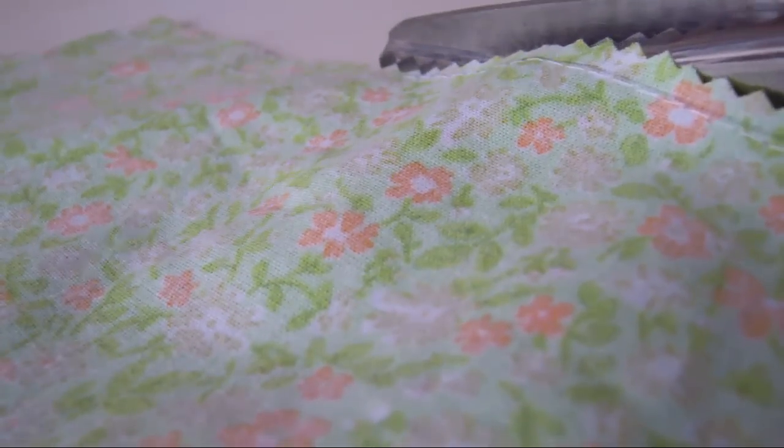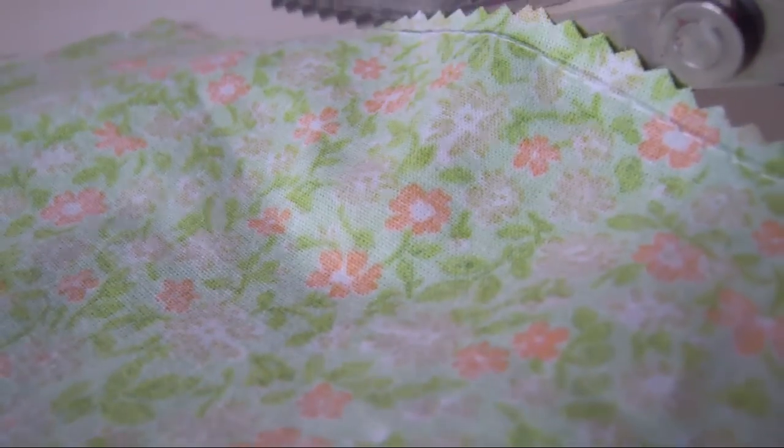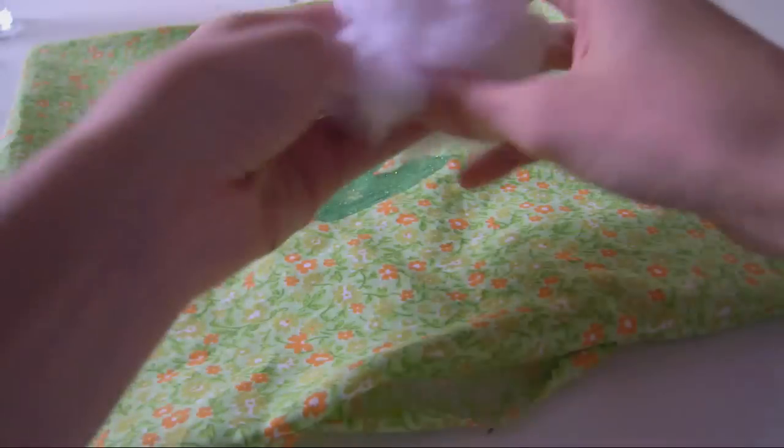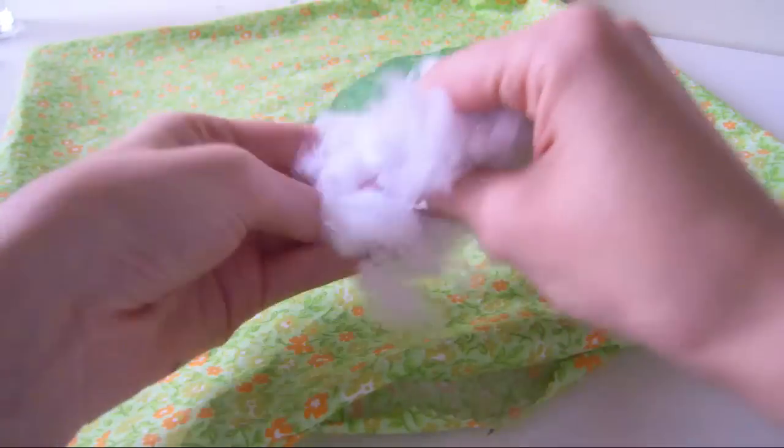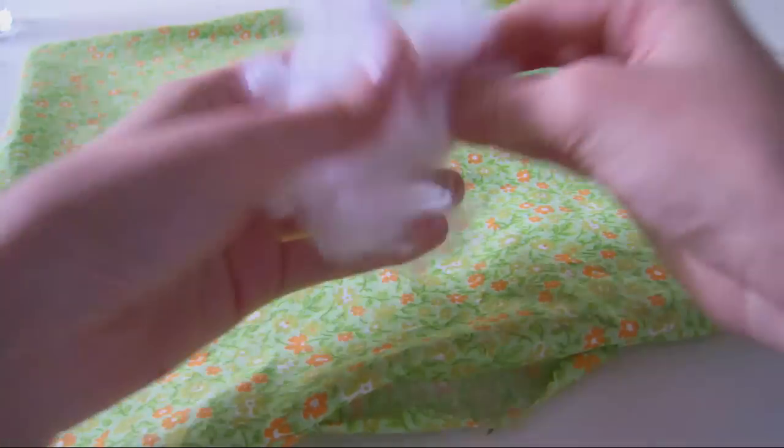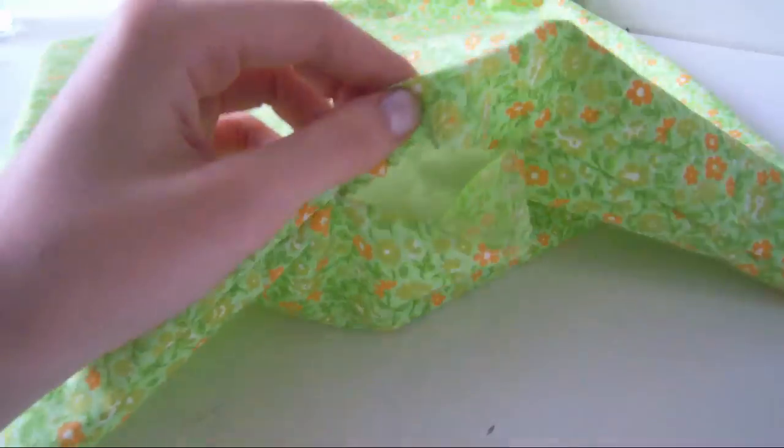I'm also cutting off all the extra fabric around the seam to make sure that the pillow isn't too bulky. I'm recycling batting here, so to make sure it's super fluffy, I'm ripping it apart in my fingers to make sure that it's nice and voluminous.